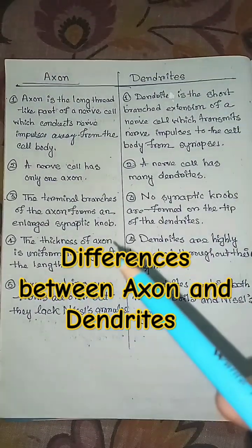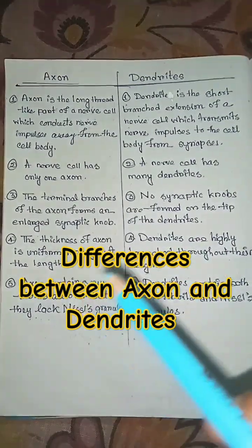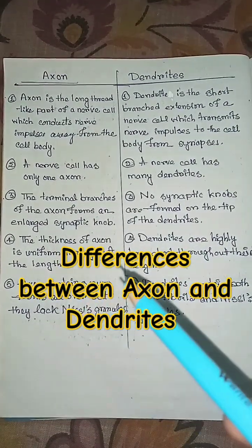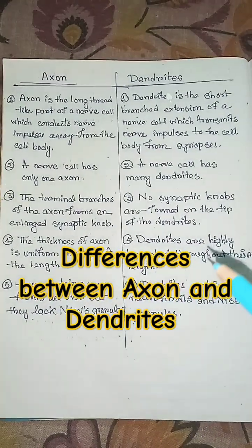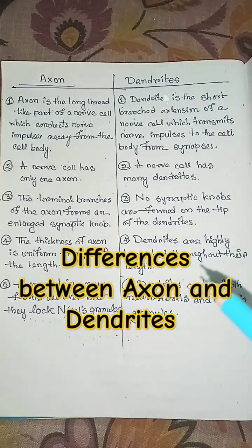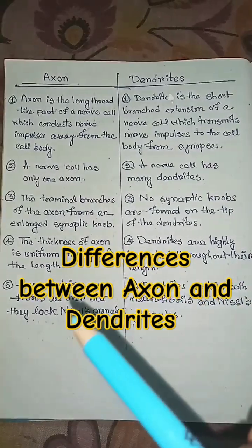The thickness of axon is uniform throughout the length. Dendrites are highly branched throughout their length.